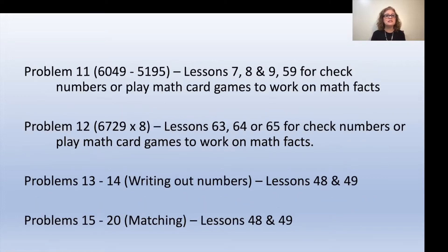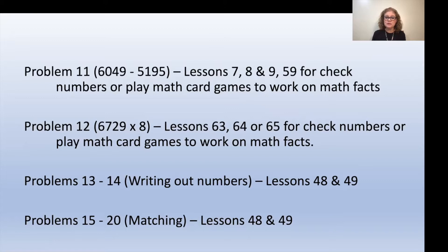For problem 11, 6,049 minus 5,195, review lessons seven, eight, and nine, or you can look at lesson 59 for check numbers, or you can play math card games to review and work on math facts. For problem 12, which is 6,729 times eight, review lessons 63, 64, or 65 if you're looking at check numbers, or you can play math card games to work on the multiplication math facts. For problems 13 and 14, which is where they're writing out the numbers, take a look at lessons 48 and 49.